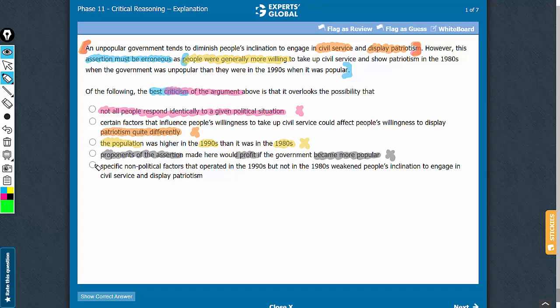Let's confirm answer choice E now. Answer choice E suggests that certain non-political factors weakened people's inclination to engage in civil service and display patriotism. See, the assertion is that an unpopular government tends to diminish people's inclination to engage in civil service and display patriotism.